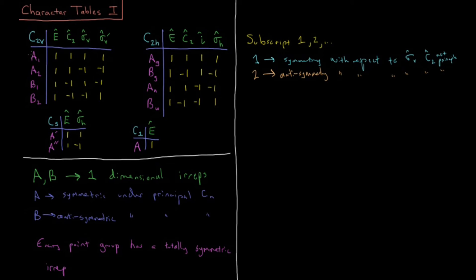Some other element which is not your principal axis. And then the 2 as well, just like with B, anti-symmetry with respect to those particular operations. Let's look here. So in the case of C2V, that is the sigma V. So A1 symmetric, A2 anti-symmetric, B1 symmetric, B2 anti-symmetric with respect to the sigma V. Lots of character tables do have 1s and 2s for subscripts.